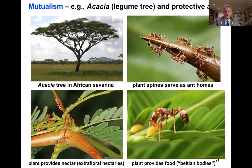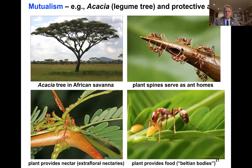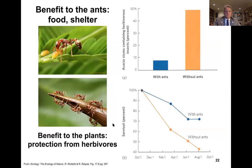The spines of the acacia are really large, and they have little domatia that serve as homes for the ants. The plant provides nectar through extra-floral nectaries, giving the ants access to nectar. They also provide food to the ants — a nutrient-rich package called Beltian bodies. So why is the acacia tree providing places to live and food for these ants? The survival of these trees is strongly dependent upon the ants.